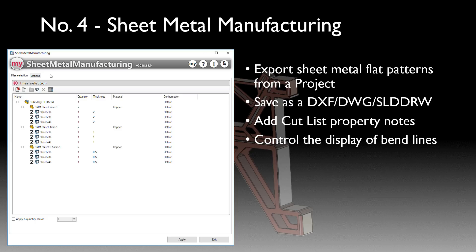The next tool is Sheet Metal Manufacturing. It addresses a common question from tech support: how to export sheet metal flat patterns for an entire project. It can run from an entire project structure and automatically output DXFs, DWGs, and SOLIDWORKS drawings with additions for cut list properties if needed, and we can control the display of how items are output in terms of whether they have bend lines or not.